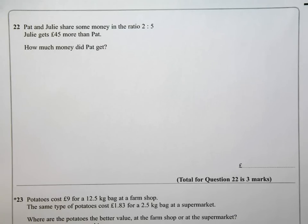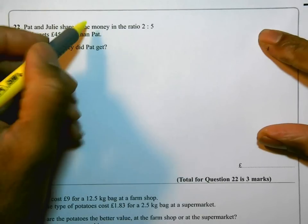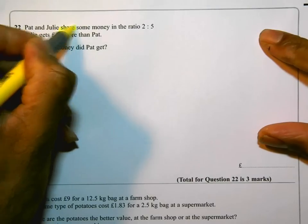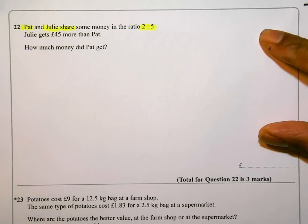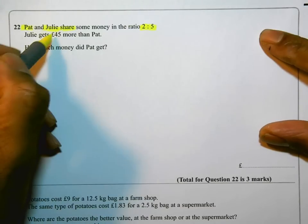Okay, here's question 22. Read this question carefully. Pat and Julie share some money in the ratio 2:5. So far, Julie gets £45 more than Pat.